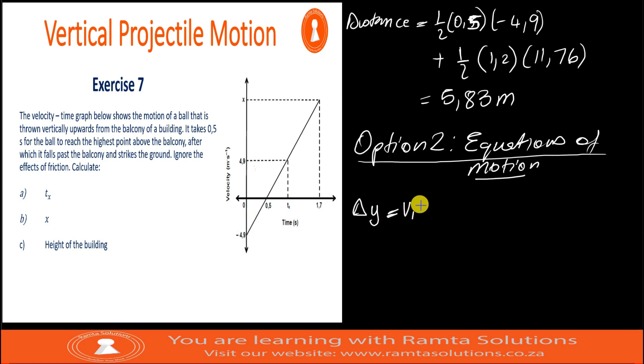Delta y equals vi delta t plus half a delta t squared. Remember, I don't have to state upwards is positive or downwards is positive. The information on the graph has already stated or dictated for me which motion is positive. Remember, it said downwards is positive. Our initial velocity for the entire motion was negative 4.9. The duration for the entire motion was 1.7 meters. Our acceleration is now positive 9.8 because downwards is positive. Again, the time is still 1.7.